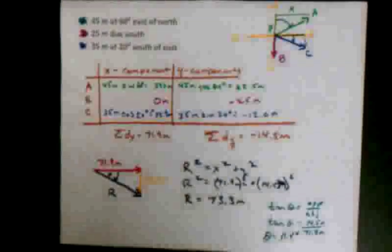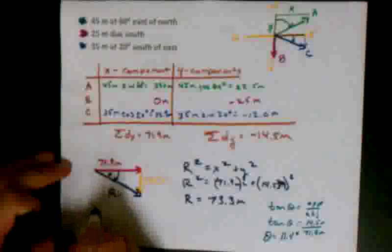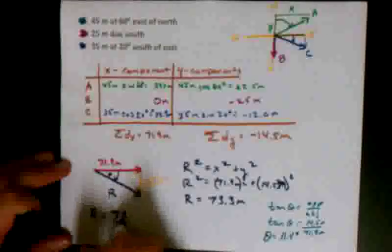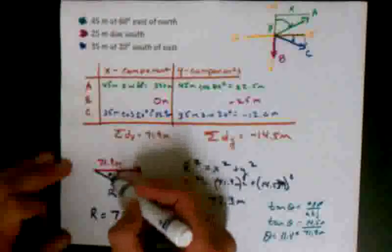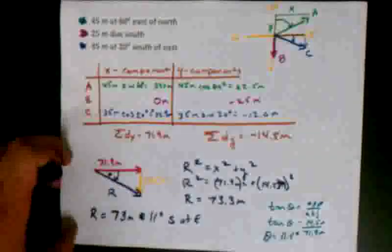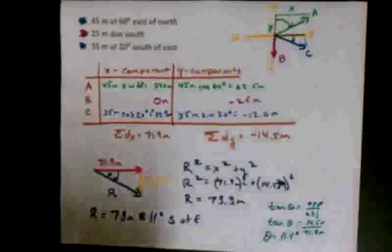And don't forget our last step is to write out our final answer. So my resultant is equal to 73 meters at 11 degrees south of east. I can tell south of east because it's measured along here. This is the east line, how many degrees south of it we want, 11 degrees south of east.